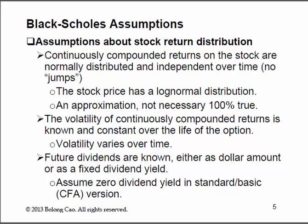An obvious reason volatility changes is that sometimes bad things happen and people have different interpretations at different times. Prices can go up and down intensively over several days, and then once people settle on understanding the event, the stock price becomes more stable. The third assumption about the underlying stock is that the future dividends — the continuously compounded dividend yield — are known, either as a dollar amount or a fixed rate. In the standard CFA curriculum version, we assume zero dividend yield, but the textbook shows you can incorporate a continuous dividend yield.